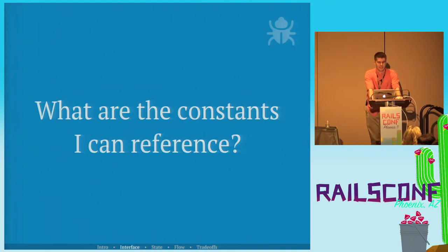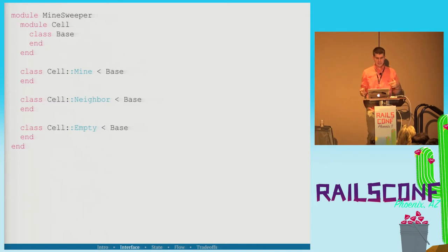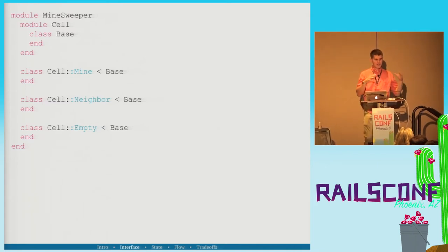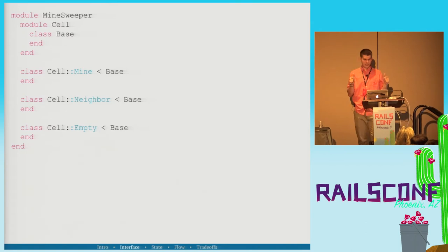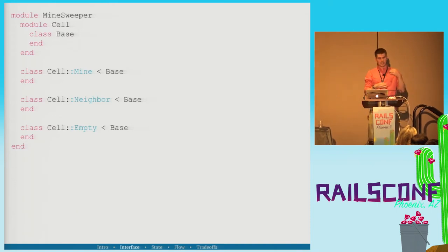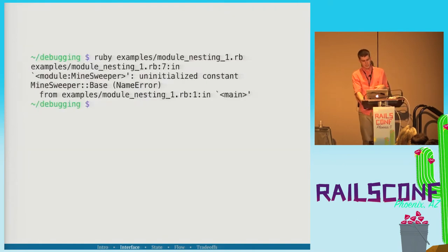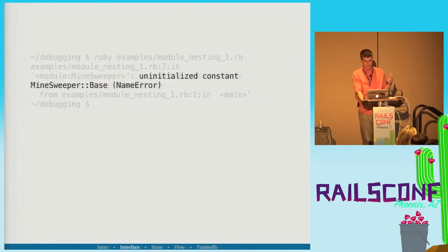What are the constants I can reference? People tend to forget that constant lookup is not the same as ancestry in Ruby — they're different things. Let's say we refactored our cells to have a different hierarchy: cell mine, cell neighbor, cell empty. We run the code and get 'uninitialized constant Minesweeper::Base.' We go back into our code, and the tool we reach for is module.nesting.